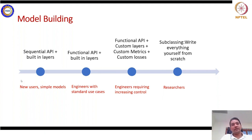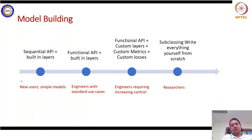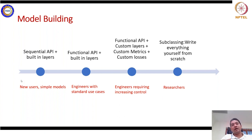The flexibility increases step by step as you go to the right in the APIs. The Functional API has improved flexibility — you can use built-in layers but now have the option to define multiple inputs and multiple outputs, which can be at several stages. You can merge them, branch them, or define your model depending on which stage you are using. So the Sequential API is for simple models for beginners, while the Functional API supports built-in layers with multiple inputs and outputs.